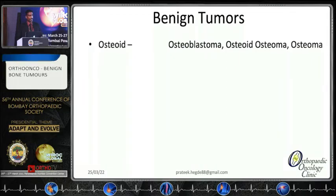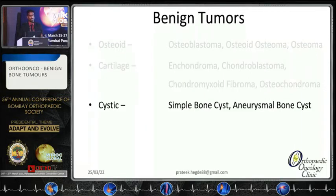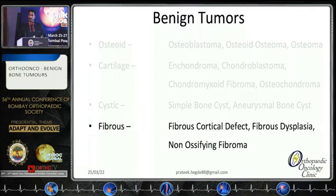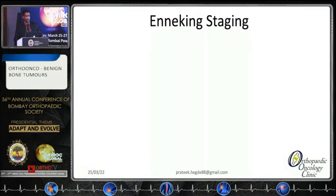One way to classify these is depending on the matrix or the constituent cells. If they are osteoid-producing, it might be osteoblastoma or osteoid osteoma. If they are cartilage ones, then they are enchondroma, chondroblastoma, or osteochondromas. Then there are cystic lesions — simple bone cysts or aneurysmal bone cysts. Then fibrous ones — fibrous cortical defects, fibrous dysplasia, non-ossifying fibroma — or the miscellaneous group which includes giant cell tumors, lipoma, or hemangiomas. These are staged according to Enneking.